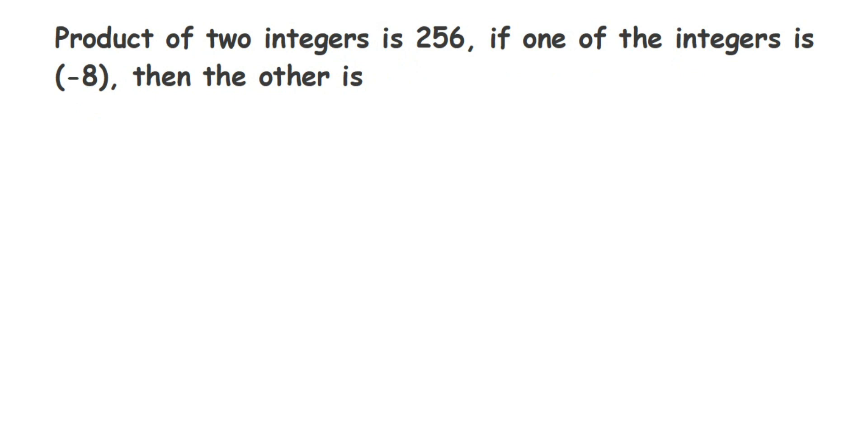Now what they have given is that the product of two integers, meaning when you multiply two integers, the answer is 256. So if I'm multiplying here two numbers, the answer is 256. And we have given one integer which is -8, suppose this is -8, we have to find out the other one.